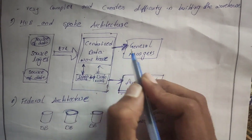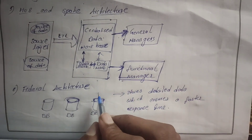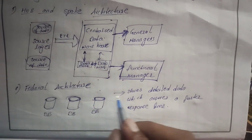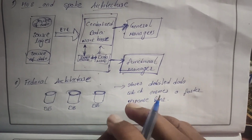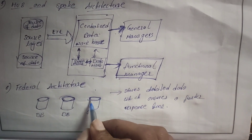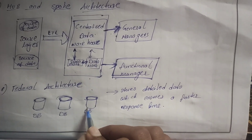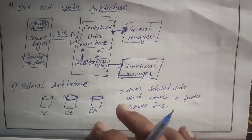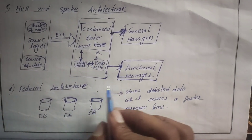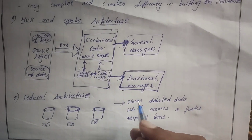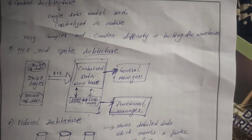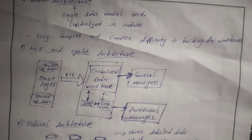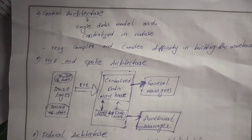Next, federal architecture — there are separate databases for detailed data, which ensures a faster response time. It stores the detailed information of an organization. That's all about the architecture of data warehouse. If you have any queries, ask me in the comment section. Thank you.